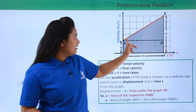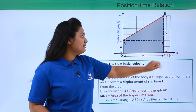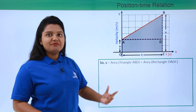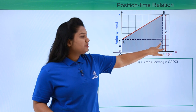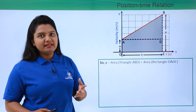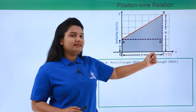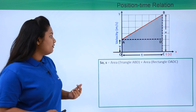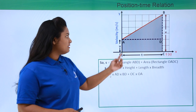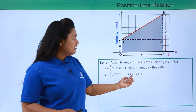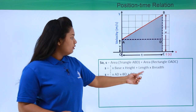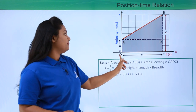So s equals the area of triangle ABD plus the area of rectangle OABC. The area of the triangle is given by half times base times height, taking AD as the base and BD as the height. The area of the rectangle is length times breadth, with length OC and breadth OA. Applying the formula: s equals half times AD times BD plus OC times OA.